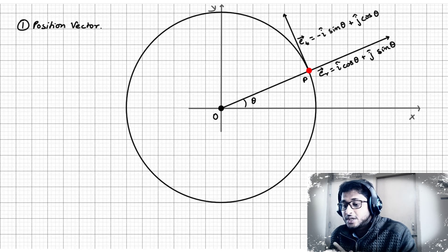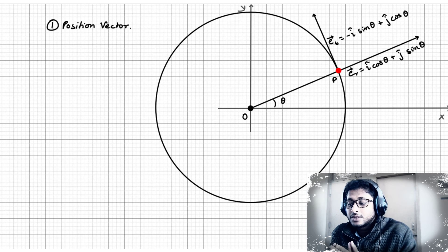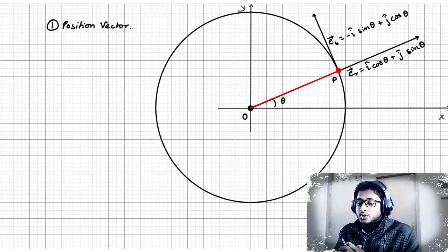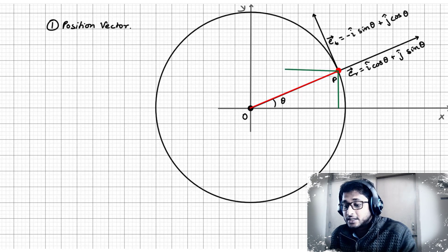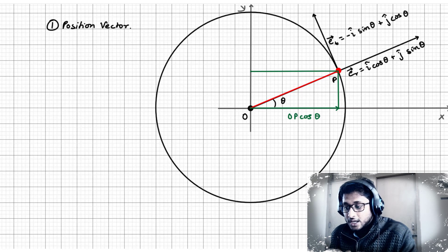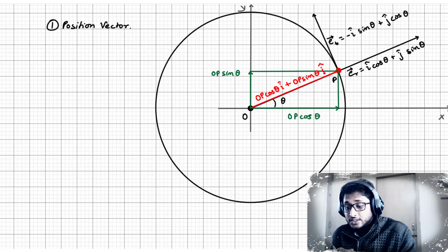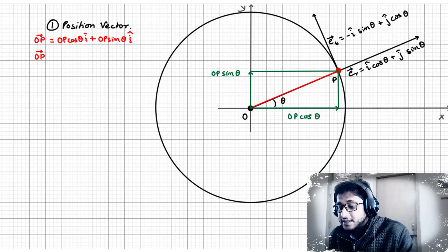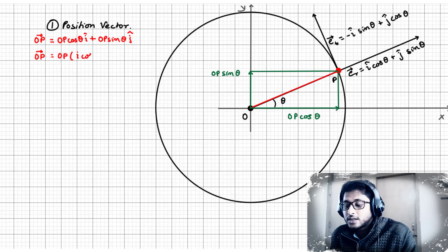Calculating the position vector is a piece of cake if you're familiar with vector algebra. You simply need to draw a straight line between the origin and the particle's position, then take the component of that line along the x and y axes and write them down as the coefficients of i and j respectively. Or you can simply multiply the length of the line with the unit vector that represents the direction of that line.